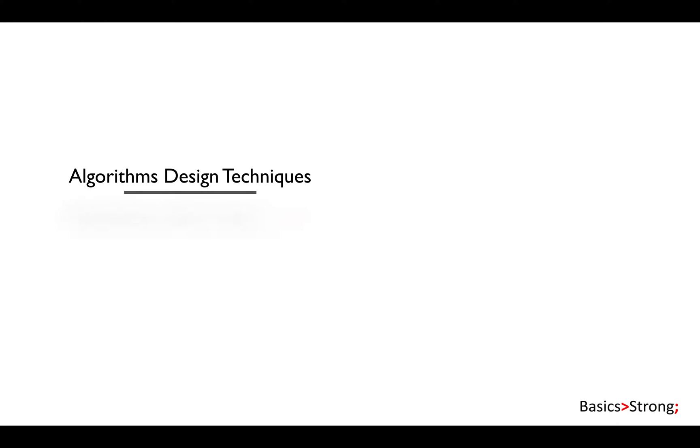The next problem we're going to talk about, which can be solved using backtracking, is the Rat in a Maze problem. You're given a maze where a rat starts from the top-left corner and has to reach the destination at the lower-right corner. There are obstacles or dead ends in this maze. The rat can go in the forward direction or downward. In the problem, you'll be given a matrix having zeros and ones.